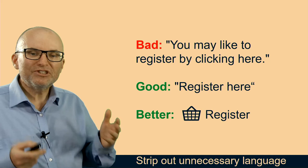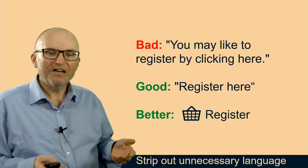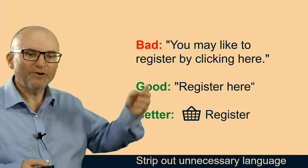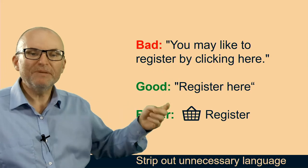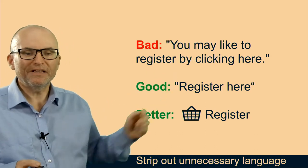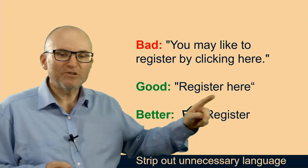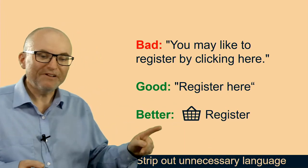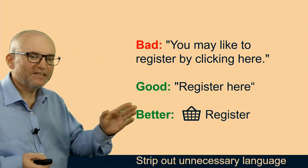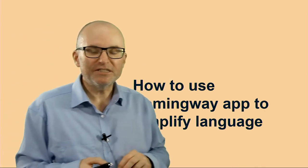Very often when you're giving instructions, you should definitely pare things down if you can. For example, very often people write in emails things like 'You may like to register by clicking here,' whereas it's much better to say 'Register here,' or just simply have an icon with a shopping basket and register. That's the simpler way of doing things.